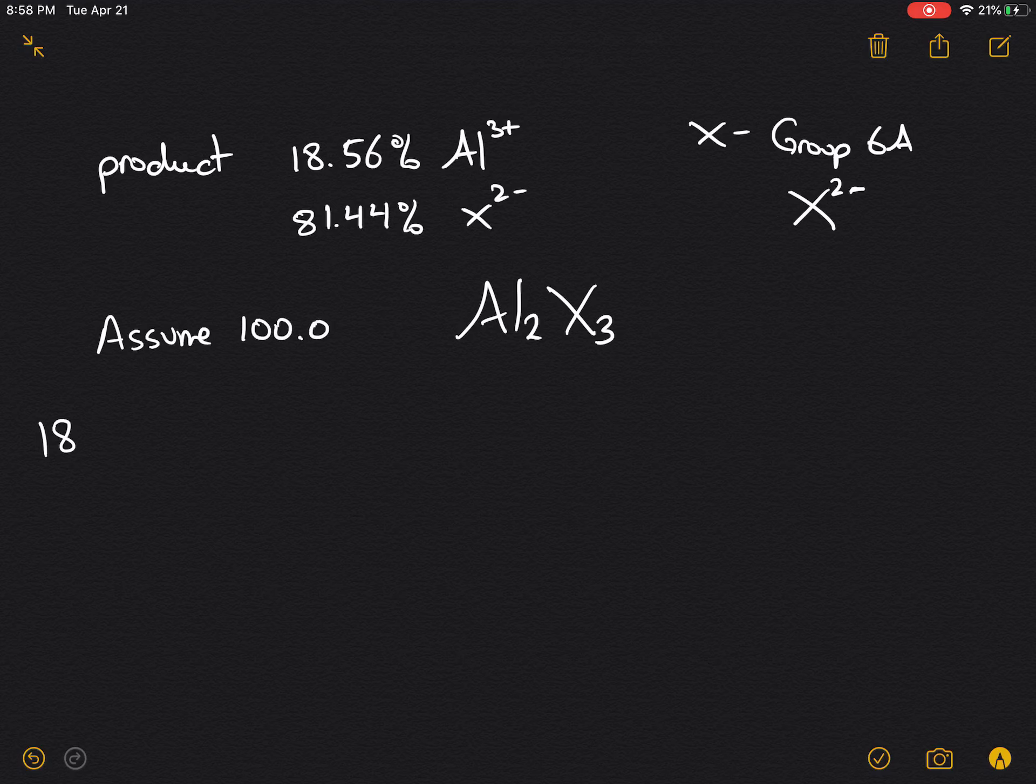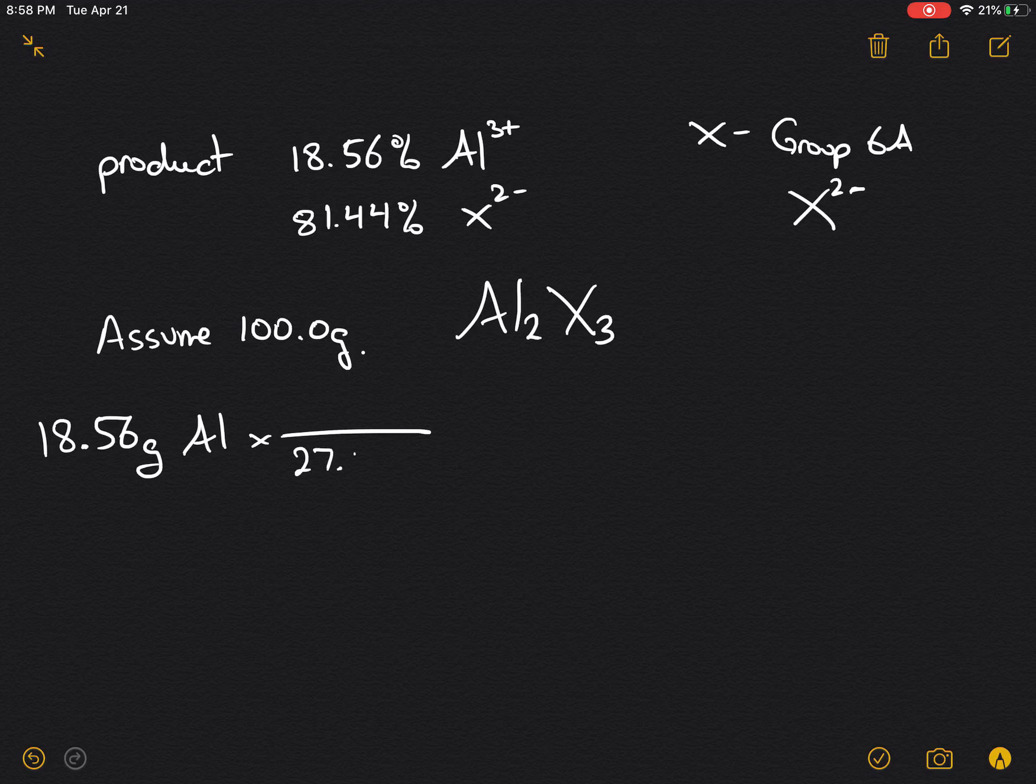Starting from, we'll assume that we have 100 grams of the ionic compound. Therefore we have 18.56 grams of aluminum. We can find moles.